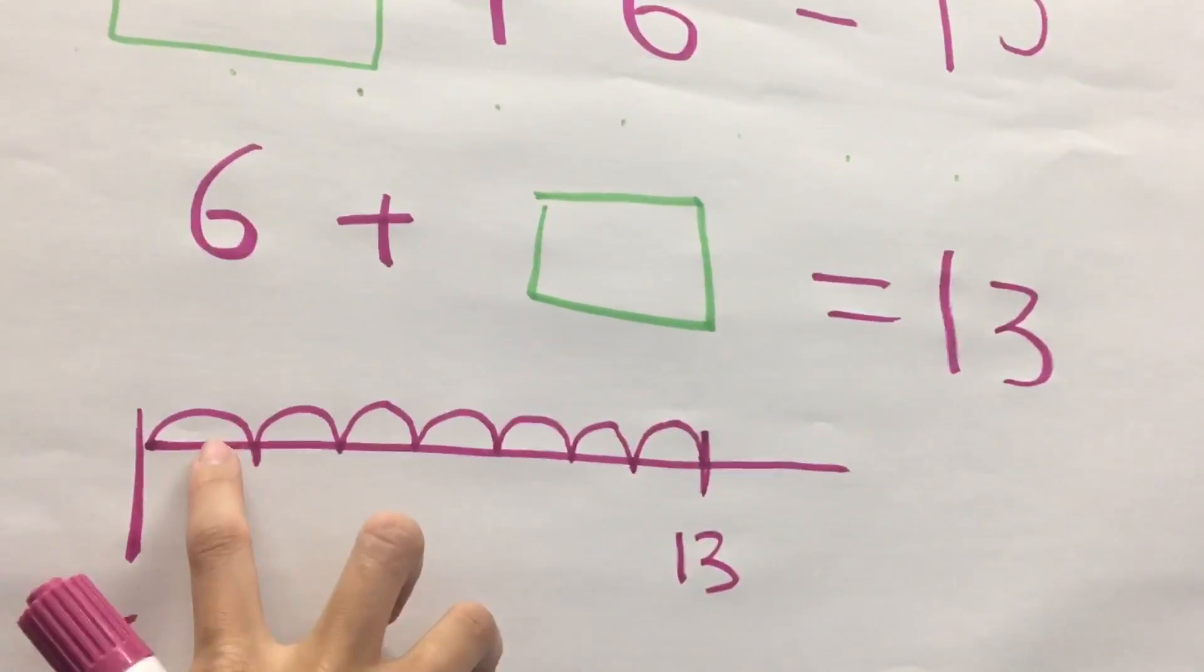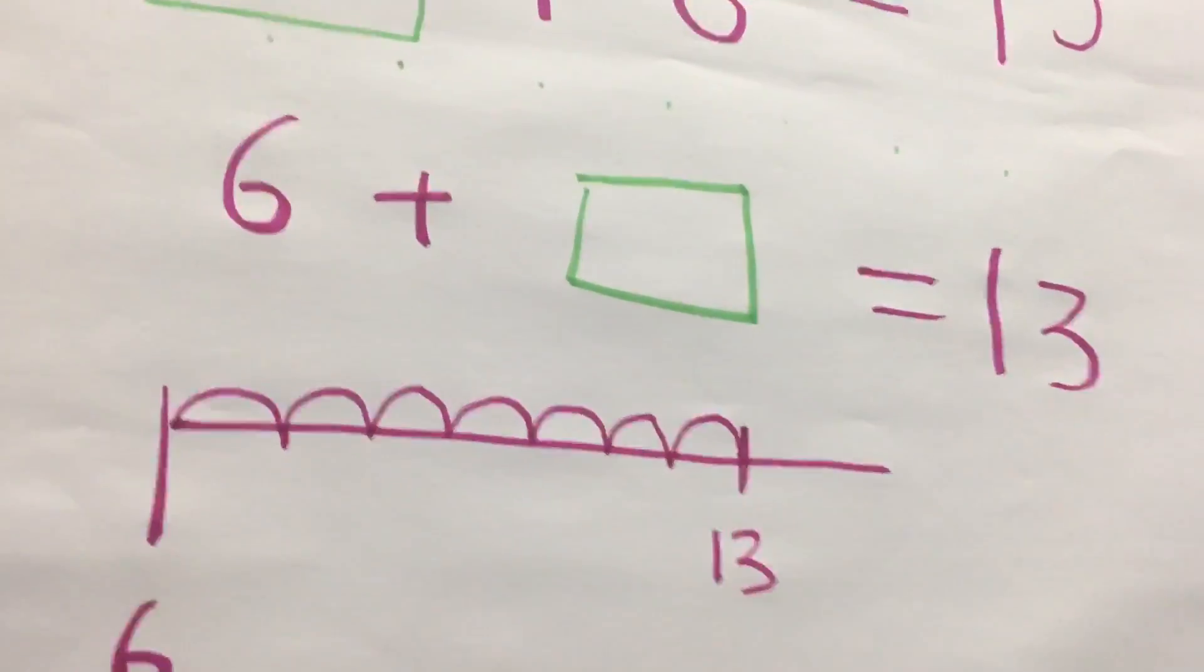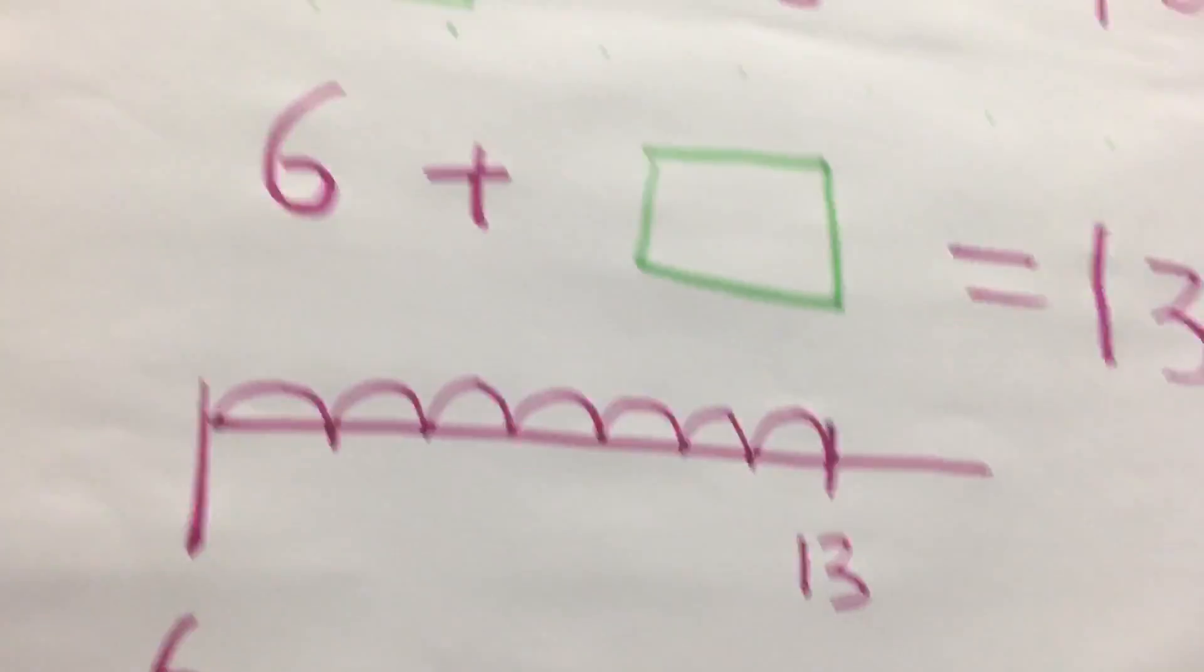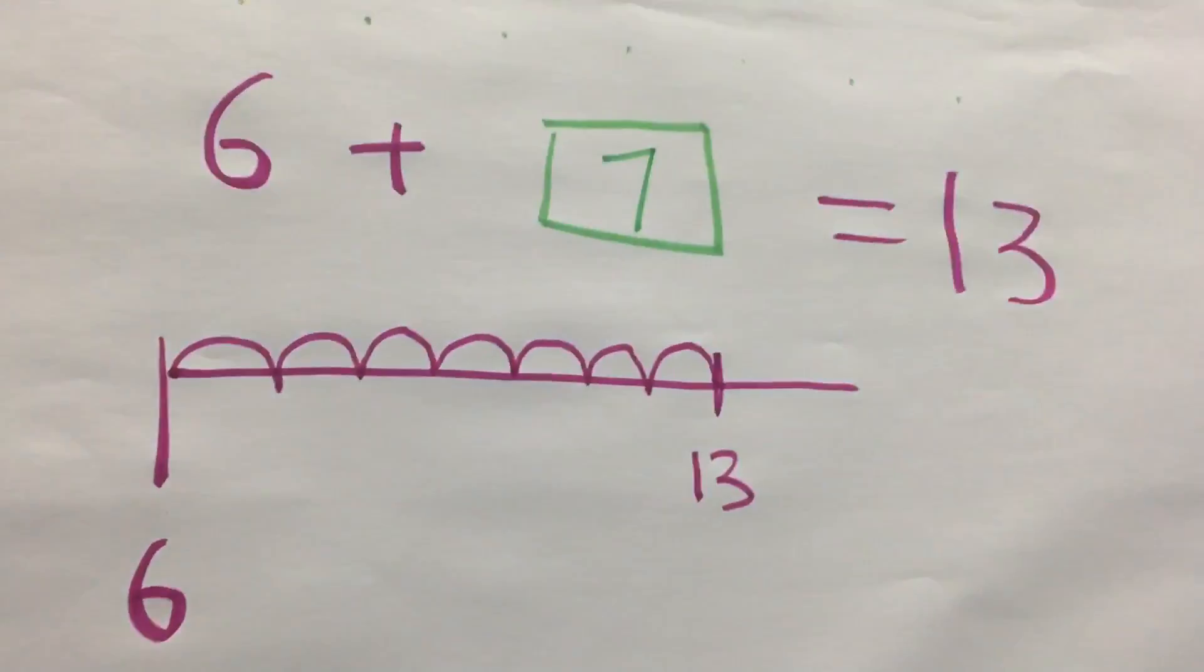How many jumps did we do? 1, 2, 3, 4, 5, 6, 7. 7 jumps. So, the missing number would be 7. There you go.